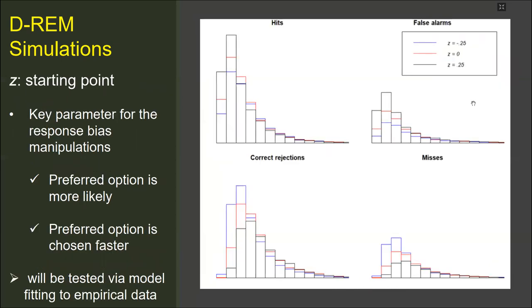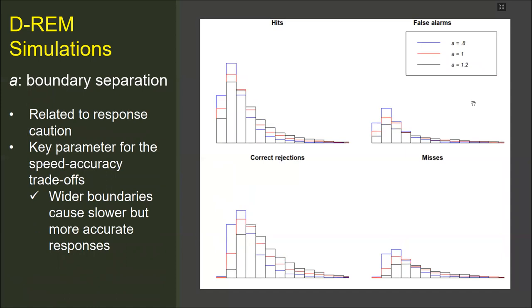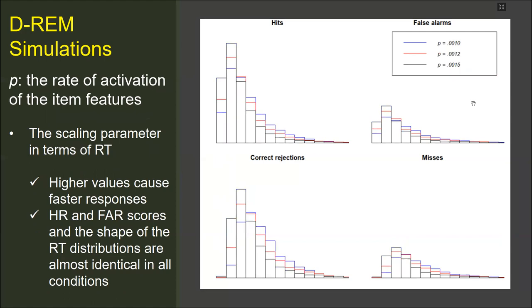Z determines the starting point of a decision. This parameter is related to the response bias manipulations with the changes of the base rates of the test list. As the decision maker is biased to one of the response options, that option is made more often and also faster than the other. The parameter a represents the boundary separation, which is related to response caution. As the boundary separation increased, the responses became slower but more accurate, which reveals a classical speed-accuracy tradeoff pattern. P is the probability of activation of an item feature in the memory. This parameter operates as a scaling factor in that it increases or decreases all the response times to the same degree.